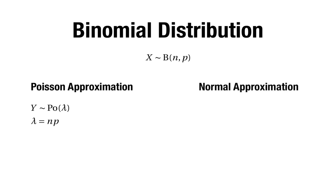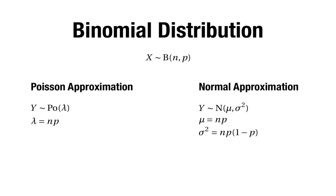The other approximation starting from a binomial distribution is a normal approximation. In this case we say Y has a normal distribution with parameters mu and sigma squared, where mu equals np and sigma squared equals np times 1 minus p. The point is that np is the mean of X, so setting mu equal to np ensures X and Y have identical means; and np times 1 minus p is the variance of X, so setting sigma squared equals np(1-p) ensures identical variances.